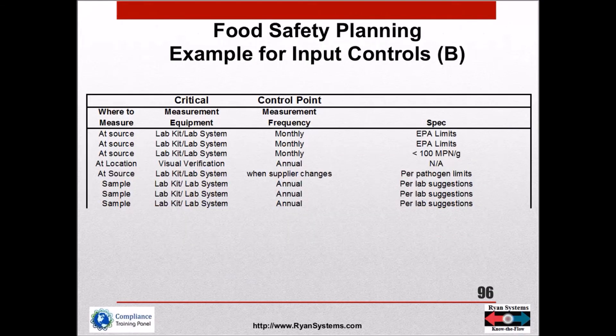Here are my input controls: water at the source — I'm going to measure monthly against EPA limits, and I'm going to continue building my spreadsheet.